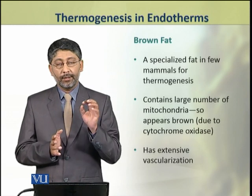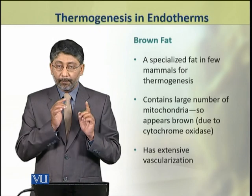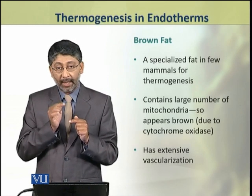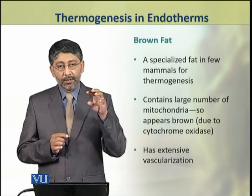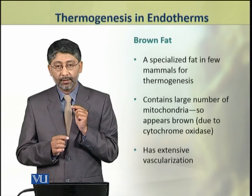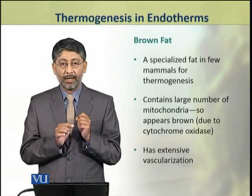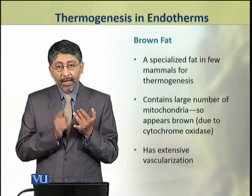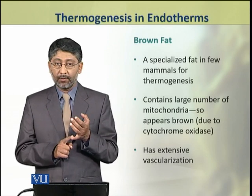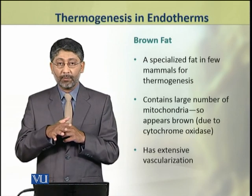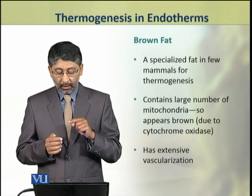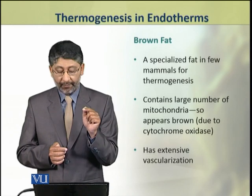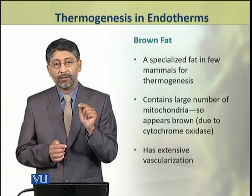The third important mechanism is the oxidation of brown fat. A few mammals have a specialized type of fat called brown fat. This fat contains a large number of mitochondria. Its brown color is due to an enzyme called cytochrome oxidase found in mitochondria — all tissues that have a greater number of mitochondria appear brown in color. In addition to containing a large number of mitochondria, brown fat also has extensive vascularization, meaning a rich supply of blood vessels.